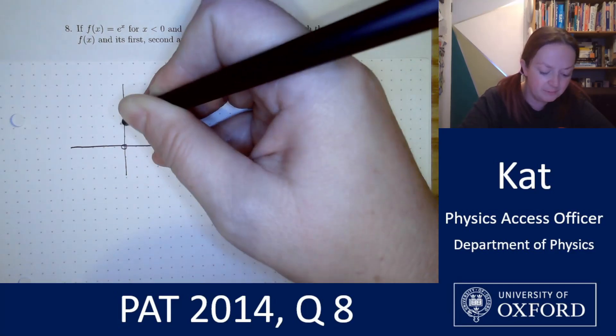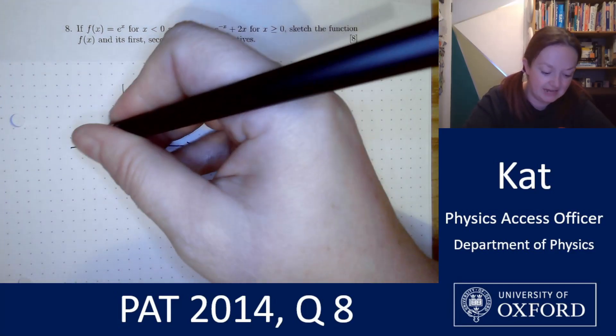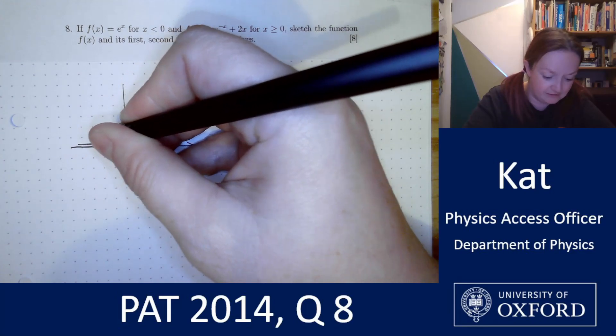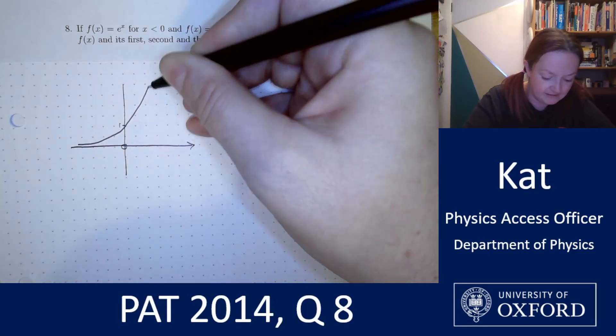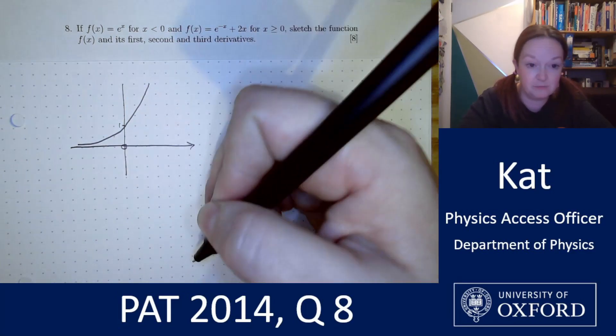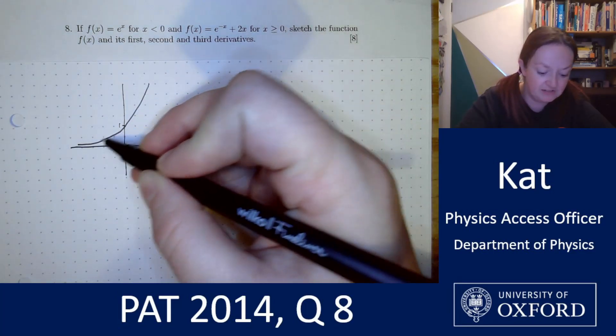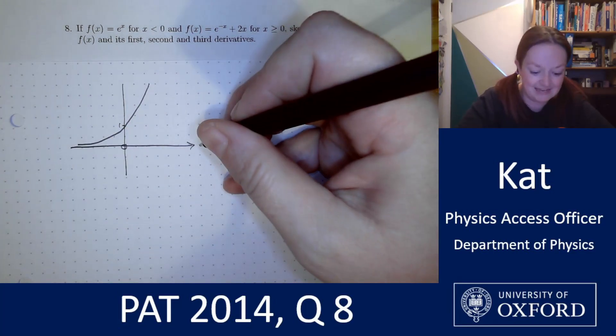I know that the basic curve of y equals e to the x or of f(x) equals e to the x is a curve which passes through the point zero one and a curve which has an asymptote on the x axis.